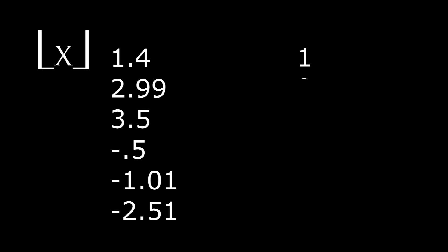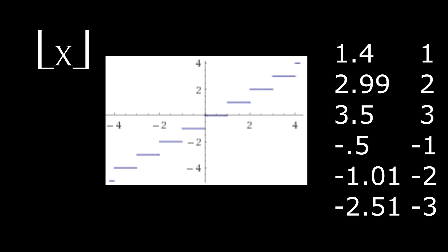Here are some examples of floor inputs. On the right are the outputs: 1.4 goes down to 1, and 2.99, although very close to 3, goes down to 2. Negative 0.5 goes to negative 1, and negative 2.51 goes down to negative 3. Here's a graph.